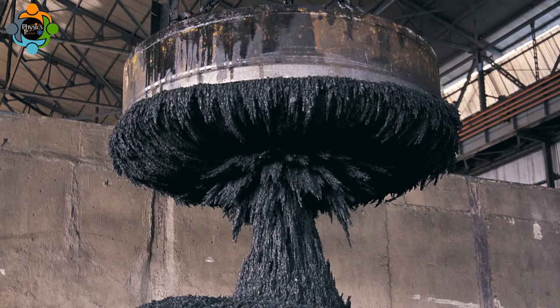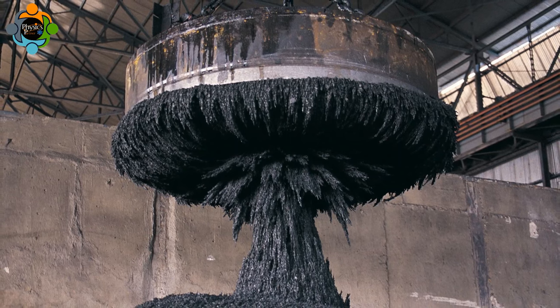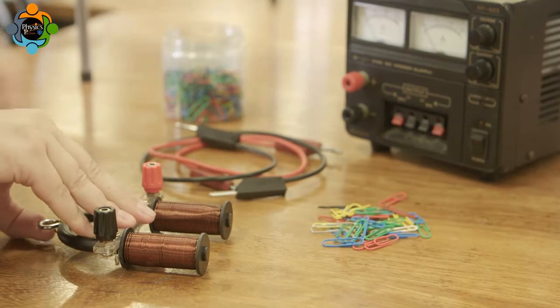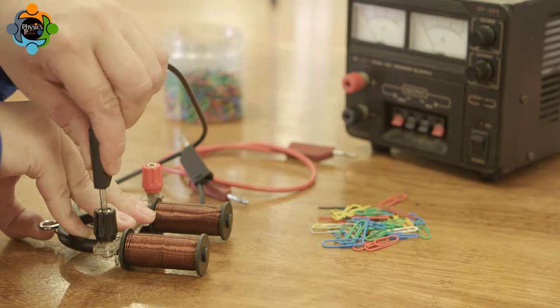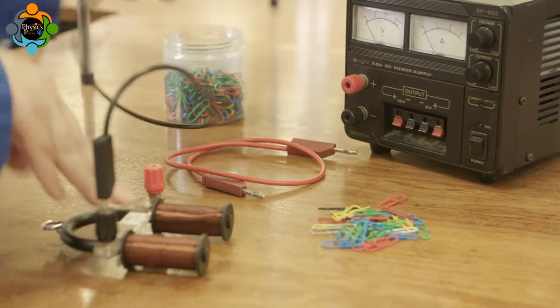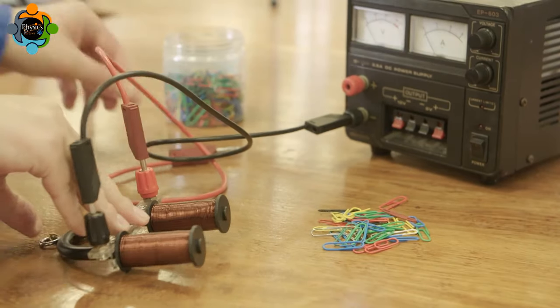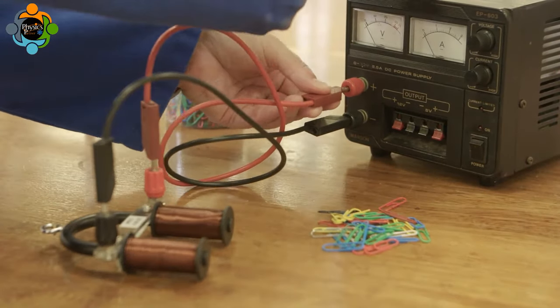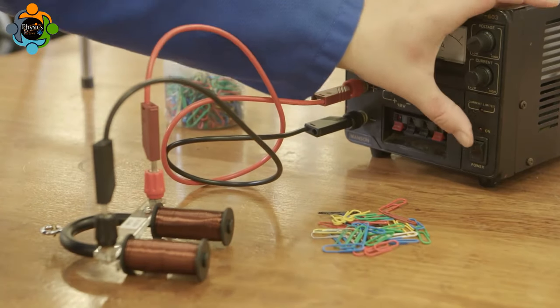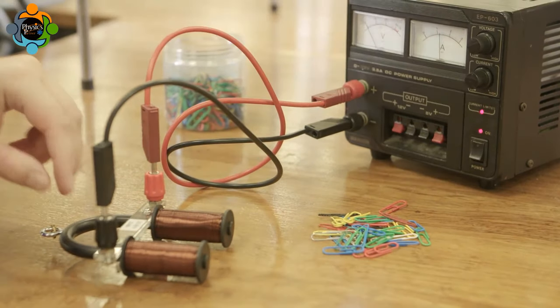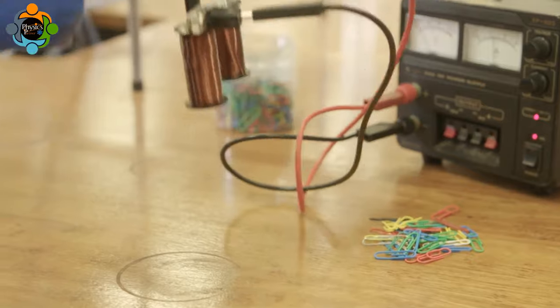In this experiment, an electromagnet will be made using an iron rod and copper wire. The strength of the magnet will then be investigated. A typical electromagnet is made from a coil of copper wire, sometimes called a solenoid. Copper is used because of its low resistance. When a current flows through the wire, a magnetic field is generated and will attract other metal objects made from magnetic materials.